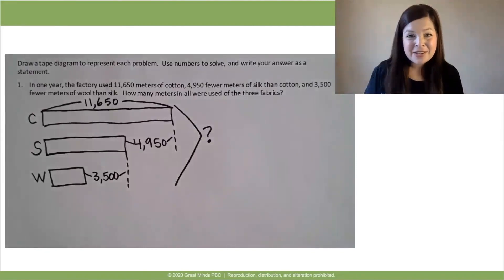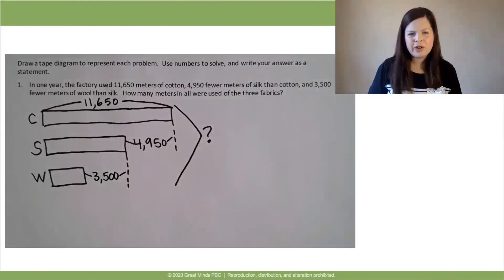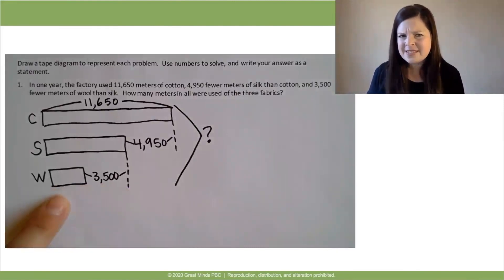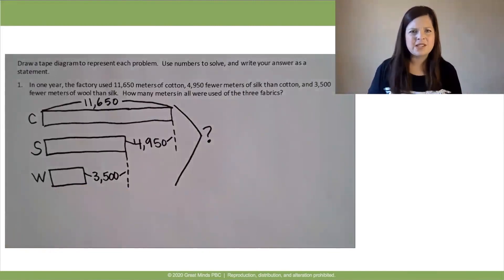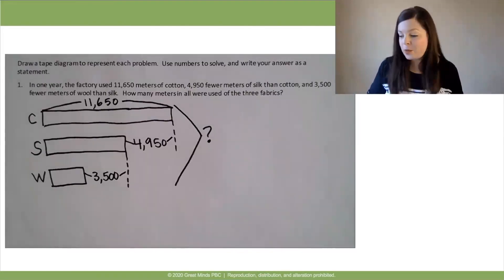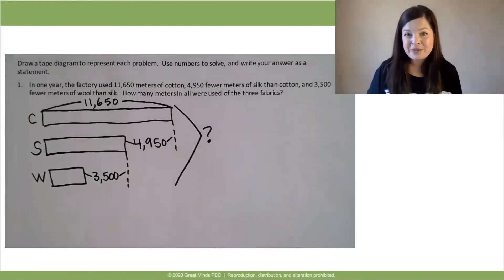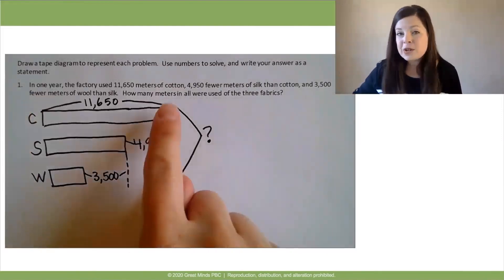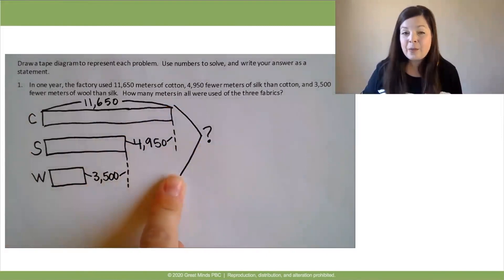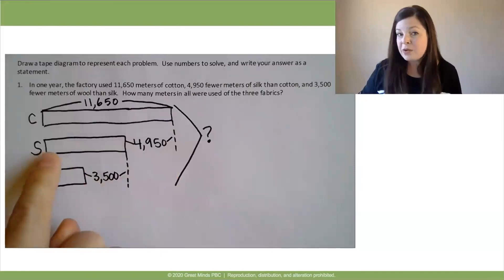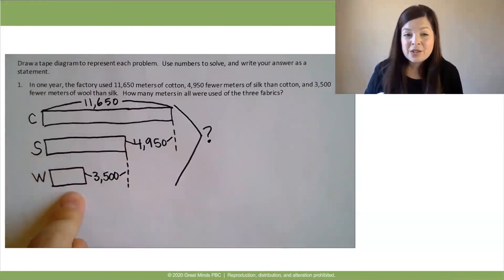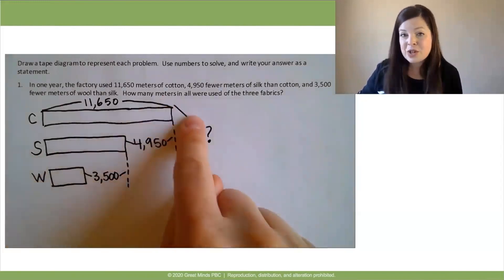Welcome back. Here's the tape diagram I drew — is it similar to what you drew? Some of you may have been thinking, wait, is it okay to have three tapes in our tape diagram? We've only had two tapes in our tape diagram so far. Well, the answer is yes. We can have as many tapes in our tape diagram as we need for the things that we're comparing in our word problems. Now, what does our tape diagram tell us about how we might solve? You may have noticed that in order to find the total of all three fabrics, we have some other things we need to find out first. We don't yet know how much silk was used or how much wool was used, so we'll need to find those amounts before we can find the total of all three.